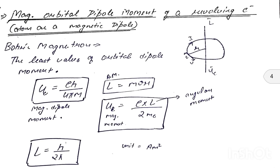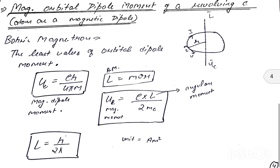The angular momentum is: L = mvr, where m is mass of the charge particle, v is velocity, and r is the radius of the circular loop. Another important formula derived from NIA: magnetic moment = eL / 2m, where e is charge on electron, L is angular momentum, and m is mass of electron. The unit is ampere·meter².